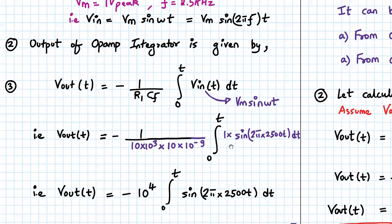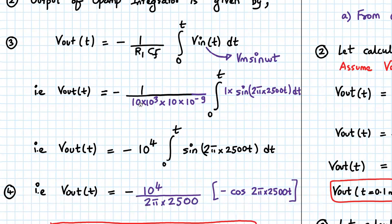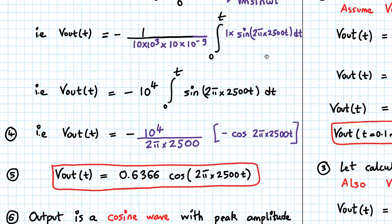VM is 1, and 2 pi f is 2500. R1 value is 10K, that is 10 times 10 to the 3, and CF value is 10 nano farad, which is 10 times 10 to the minus 9. The multiplication of R1 times CF gives 10 to the 4. So V out will be minus 10 to the 4, integral from 0 to t of sine of 2 pi times 2500 t dt. The integral of sine will be cosine, with a constant of integration coming out.